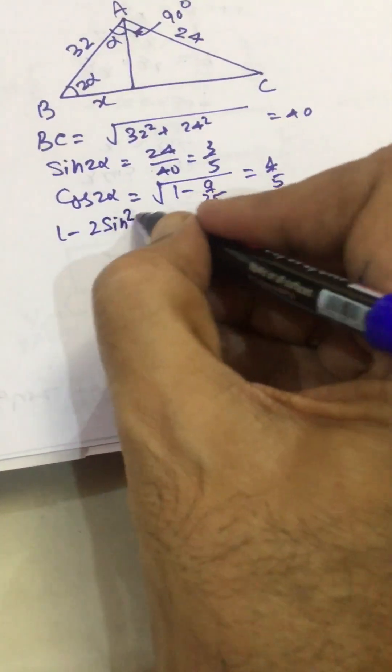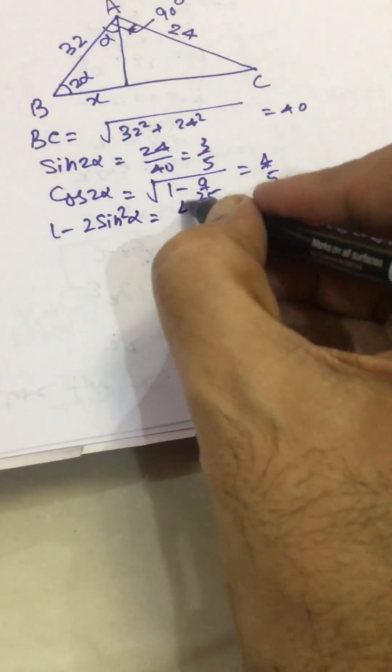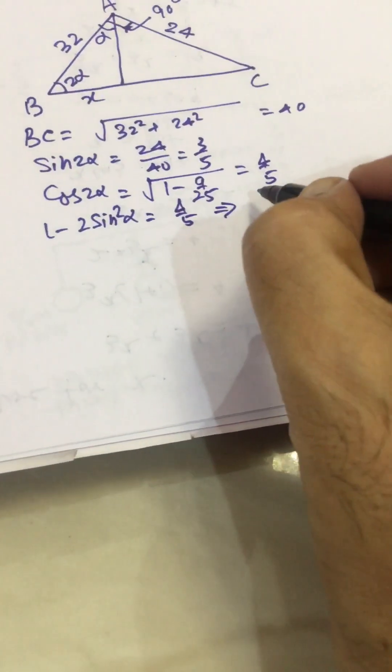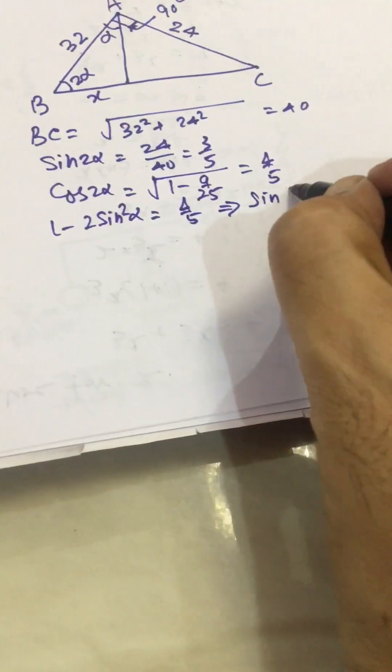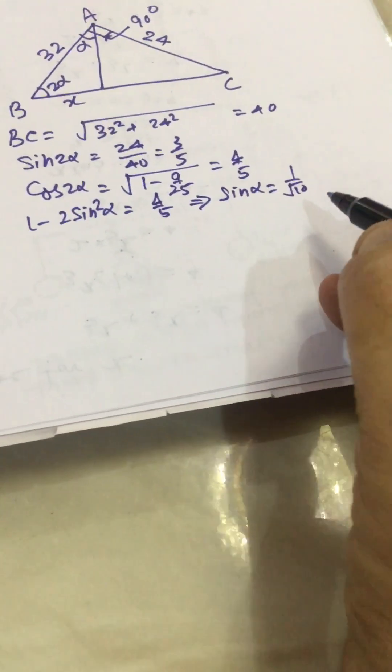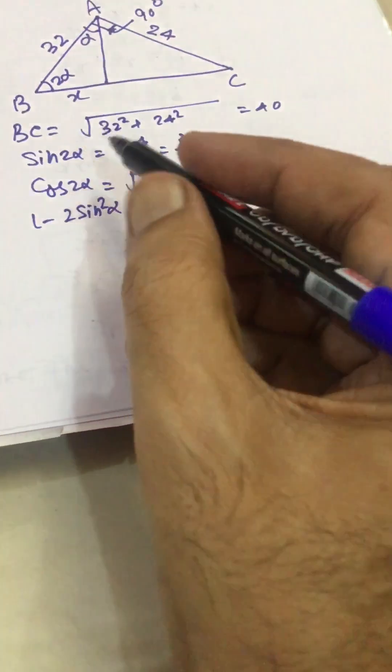Sin²α equal to... this gives 1 by under root 10, right. Now applying sine rule to triangle ABD.